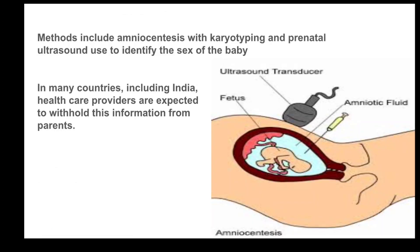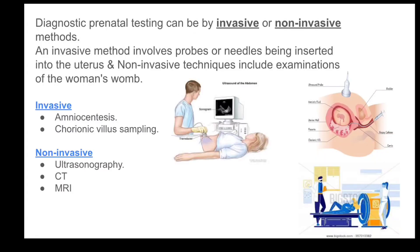Methods include amniocentesis with karyotyping and prenatal ultrasound used to identify the sex of the baby. In many countries, including India, healthcare providers are expected to withhold this information from parents. Diagnostic prenatal testing can be by invasive or non-invasive methods.